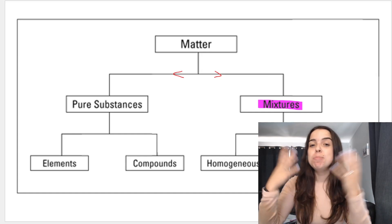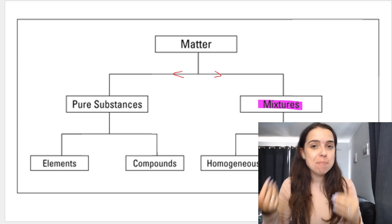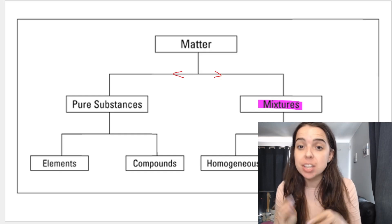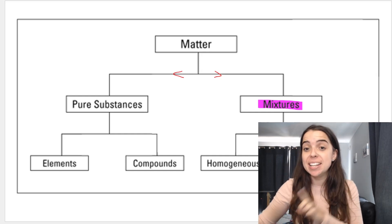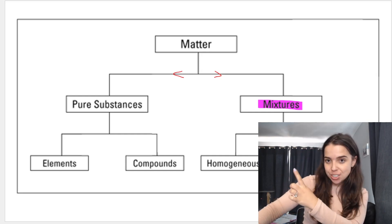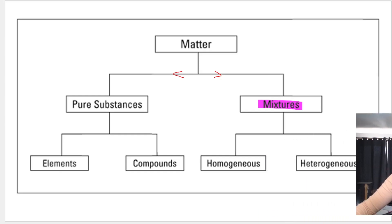In the previous video we discussed that matter can be divided into pure substances and mixtures. If you've missed that video we go into more detail about this — link in the description box below. But in today's video we're focusing on mixtures and in particular the two different types of mixtures: homogeneous versus heterogeneous.